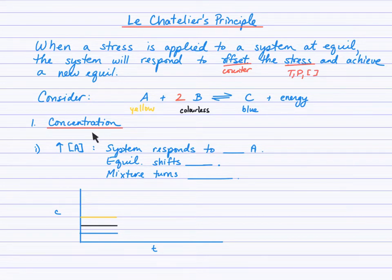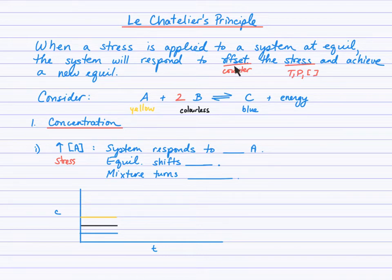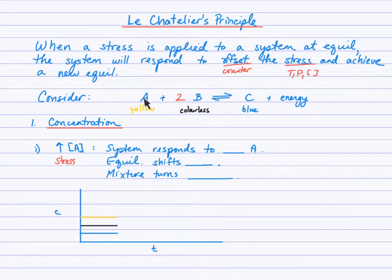To begin with, we'll consider concentration stresses. The stress here is to increase the concentration of A. How does the system respond? Keep in mind it's responding to offset or counter the stress. If the stress is to increase the concentration of A, then the system will respond to try to decrease or consume A.